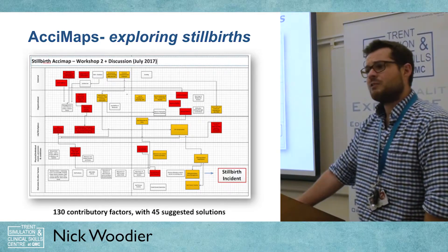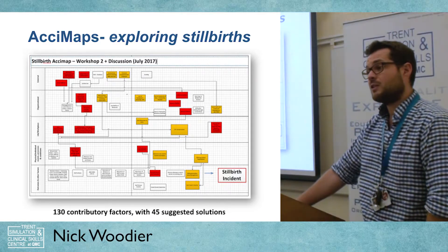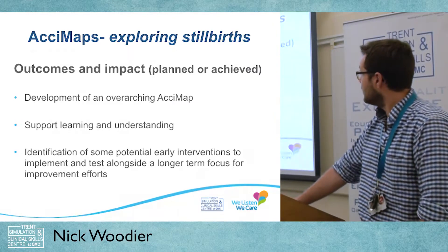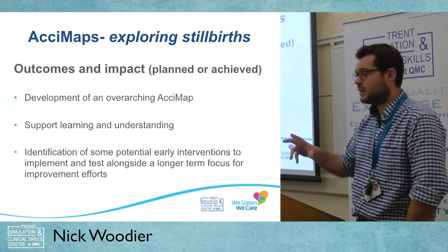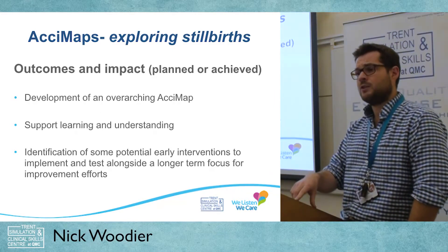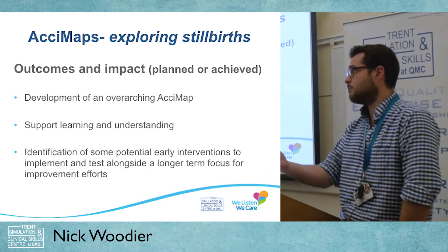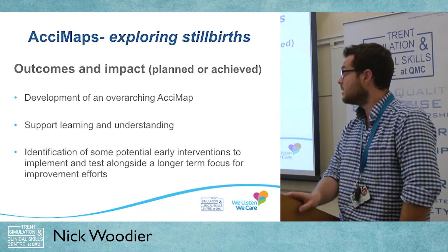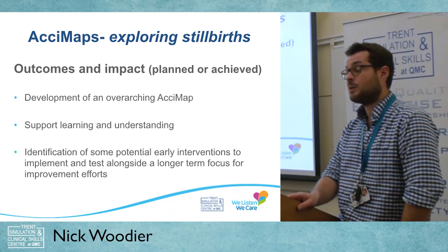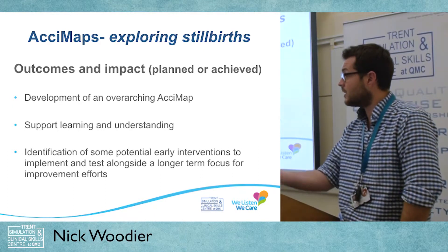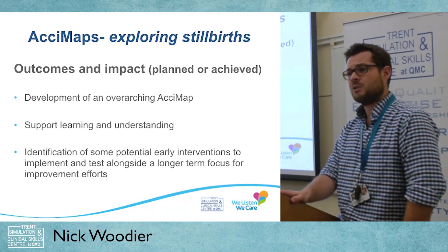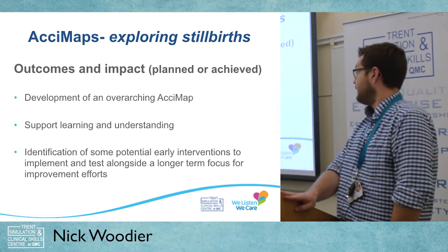We came up with 130 different contributory factors and from that almost 45 different recommendations — it's massive and there's no way we're going to do all of these straight away. We're now at the point of looking at where we can focus our efforts to undertake local improvement work, identifying quick early wins, and also what we need to share further afield. With the advent of things like HSIB, we've got some reasonably good avenues to go and share this work. I'll leave it there.